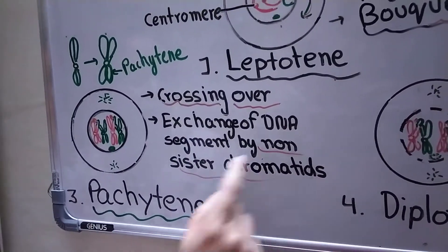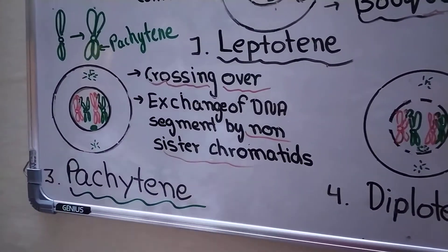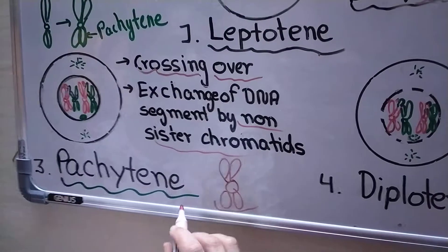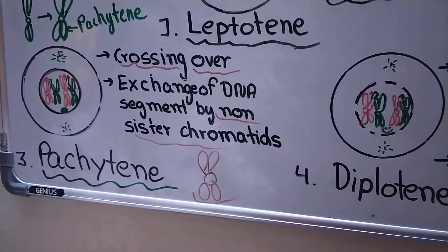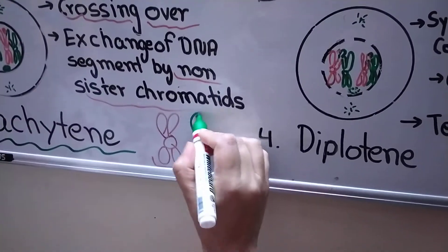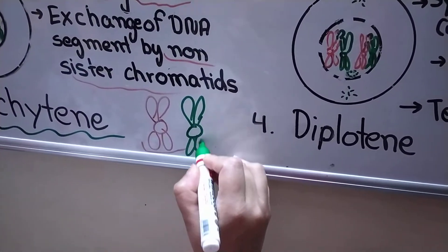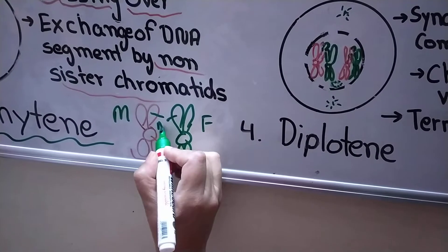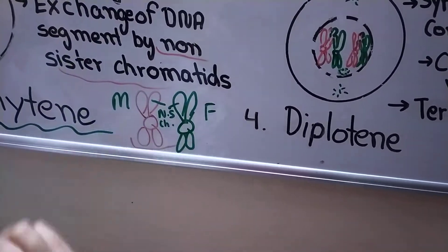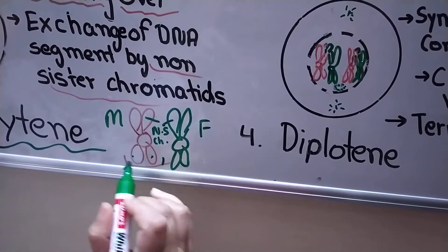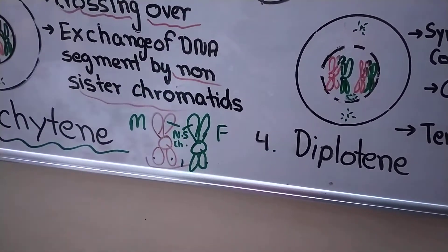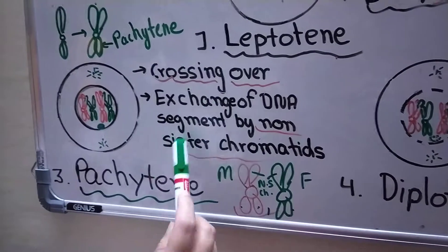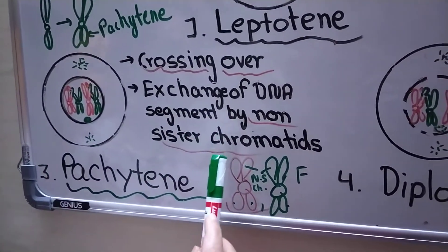I hope you are aware of the terms non-sister chromatids and sister chromatids. Sister chromatids belong to the same chromosome. But if you have a pair of homologous chromosomes — one from father and one from mother — then these two will be known as non-sister chromatids. The chromatids of the same chromosome are known as sister chromatids. So in pachytene, crossing over takes place and exchange of DNA segments takes place between the non-sister chromatids.